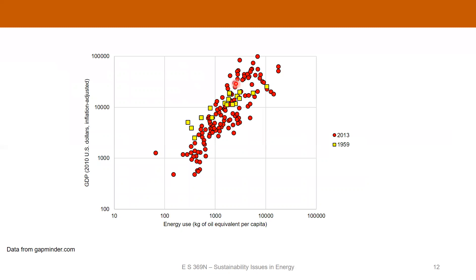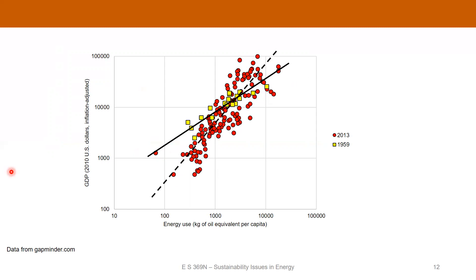We can plot another set of data with energy use on the same x-axis, but this time showing GDP — inflation-adjusted in 2010 US dollars. There's a very good correlation in the 2013 data. You can also draw a line through the 1959 data, though it's a smaller dataset so it's harder to make strong inferences. Overall, higher energy use seems to correlate with increases in GDP — going from that cluster of yellow squares to the red dots — whereas lower energy use is correlated with lower GDP.